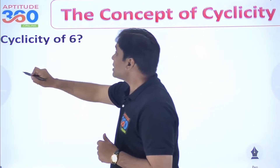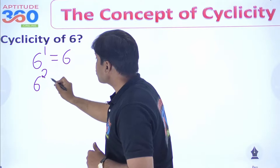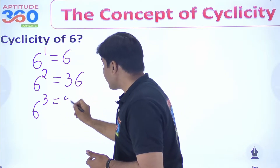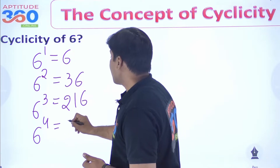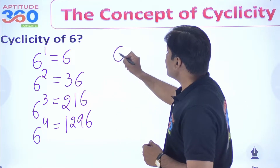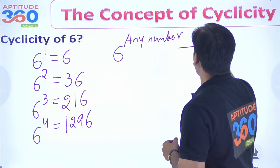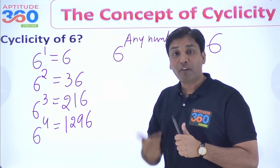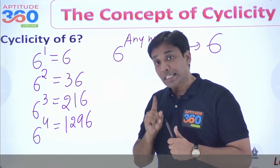So let us find out what is the cyclicity of 6. 6 to the power 1 is 6. 6 to the power 2 is 36. 6 to the power 3 is 216. And 6 to the power 4 is 1296. So I would say that 6 to the power any number — the digit at the unit place will always be 6. It cannot be anything else. This is what we saw in the last video — that 5 to the power anything was always 5. So cyclicity of 5 is 1, and the cyclicity of 6 is also 1.